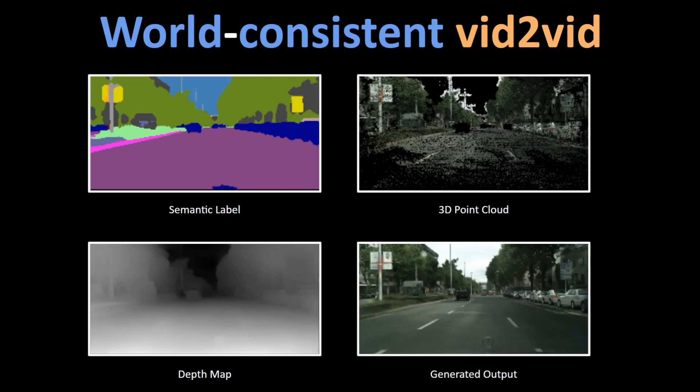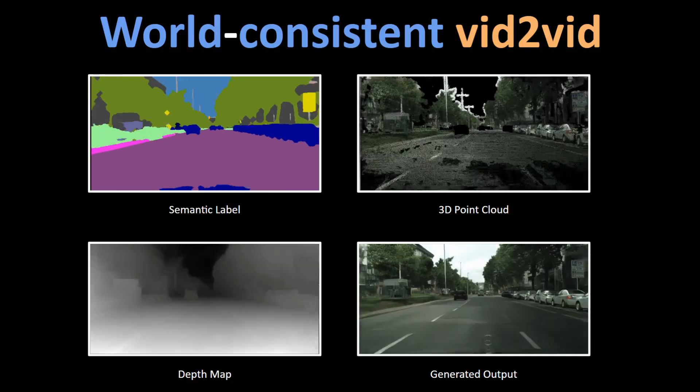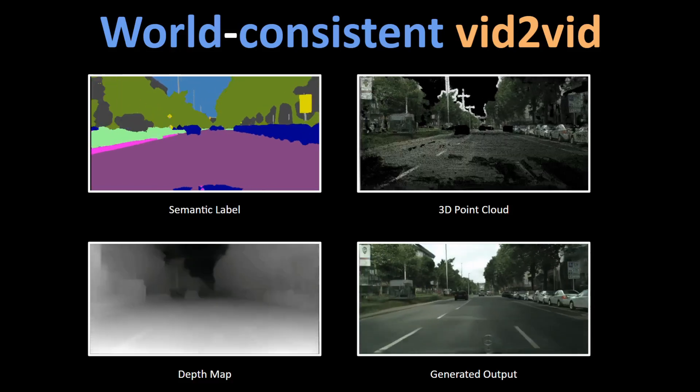This way, when you revisit the same scene, our model can refer to the guidance image to re-render the same scene with consistency. This is why this model is called World Consistent Video Synthesis.